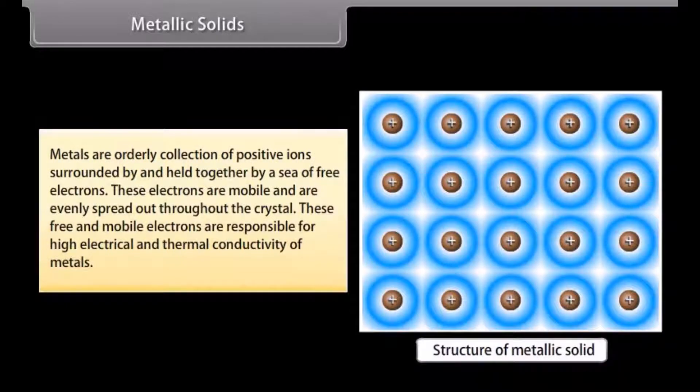Metallic solids. Metals are orderly collection of positive ions surrounded by and held together by a sea of free electrons. These electrons are mobile and are evenly spread out throughout the crystal. These free and mobile electrons are responsible for high electrical and thermal conductivity of metals.